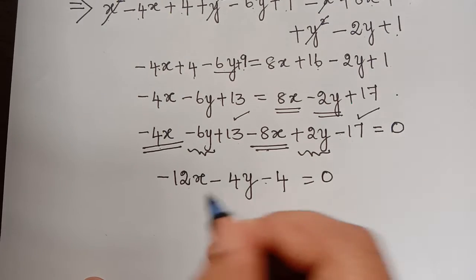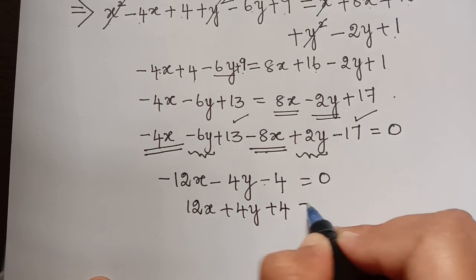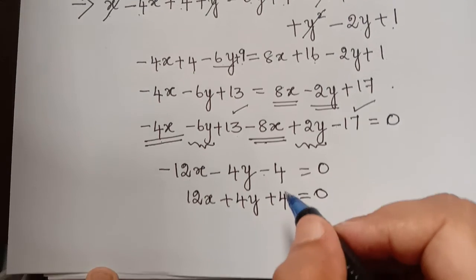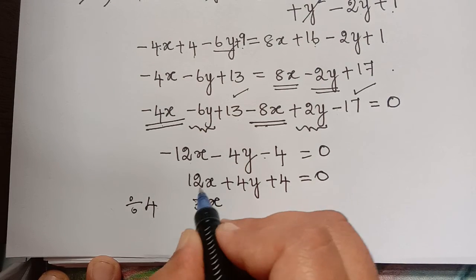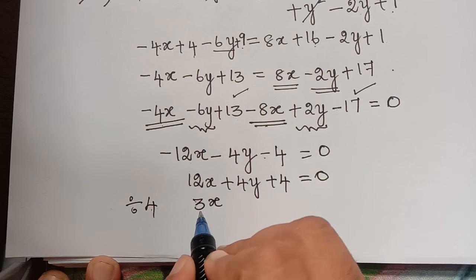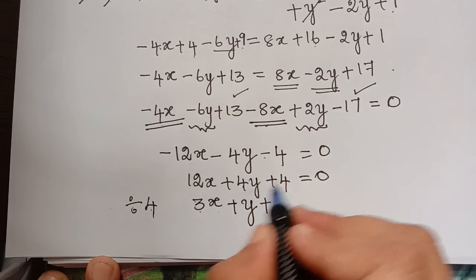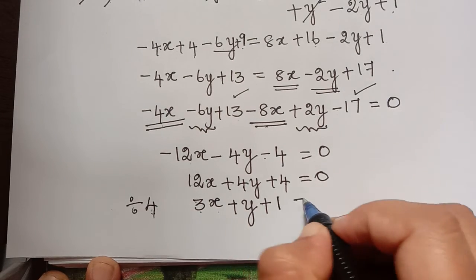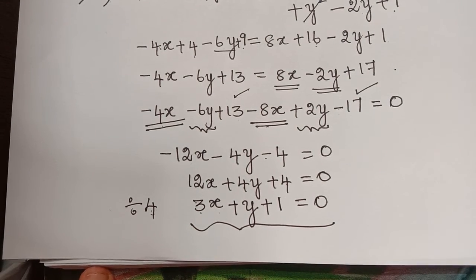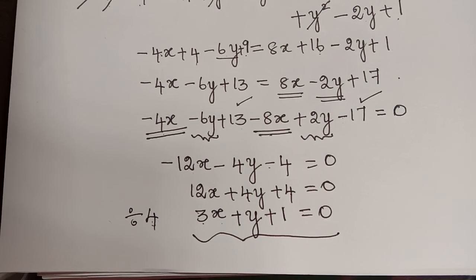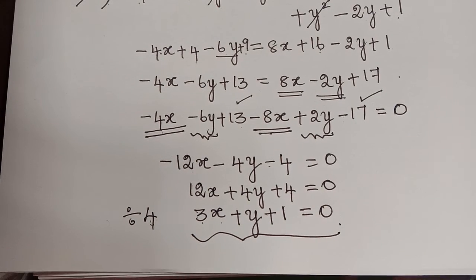Changing the sign throughout: 12x + 4y + 4 = 0. Dividing by 4 gives 3x + y + 1 = 0. This is the required locus of the point which is equidistant from the two given points. Hope you have understood this concept of finding the locus of a point. Thank you.